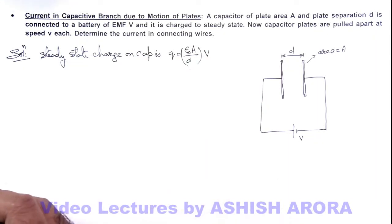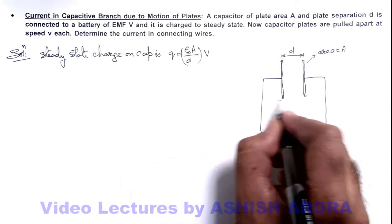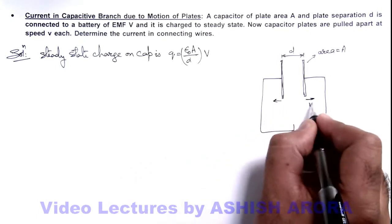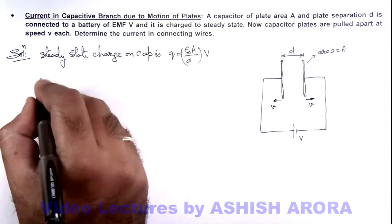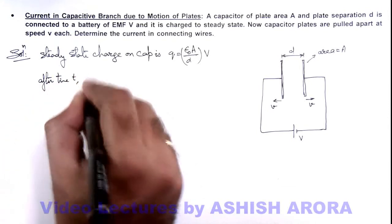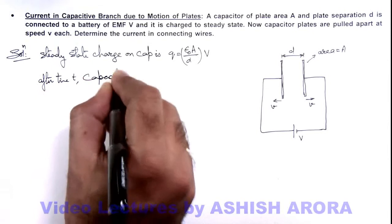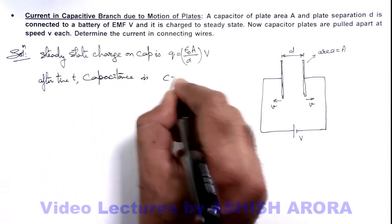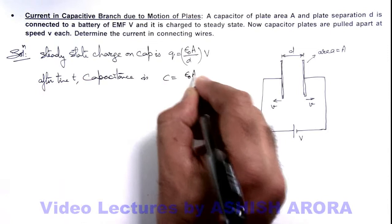Now in this situation, if the plates are pulled apart each with speed v, then we can write after time t, capacitance of capacitor is - this capacitance we can write as ε₀A/(d + 2vt).